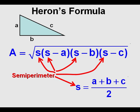However, in order to solve the equation, we need to know what S is. S is the semi-perimeter — the perimeter is all sides of the triangle added together and divided by 2.